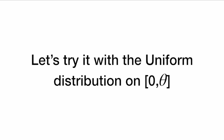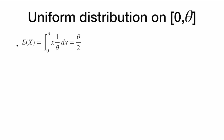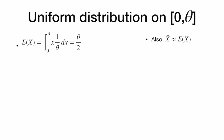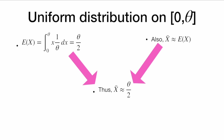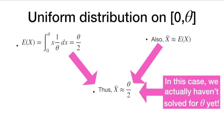Let's try it again with a uniform distribution on 0 to theta. The expected value of a uniform distribution on 0 to theta — that's 0 here, theta there — is just the average, theta over 2. We could also prove that with calculus. So E[X] = theta/2. Again, we use x-bar ≈ E[X], and combine these to get x-bar ≈ theta/2. In this case we haven't solved for theta yet, so we move the 2 to the other side: theta = 2 × x-bar. But remember, this is our estimate, so we write theta-hat_MOM = 2 × x-bar.